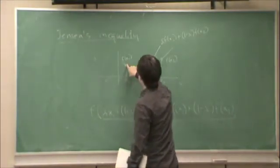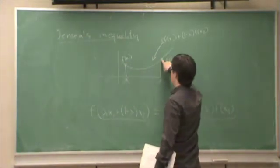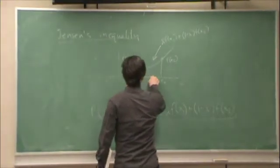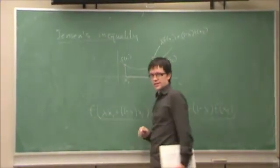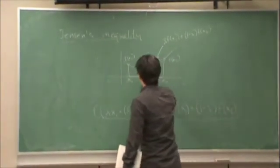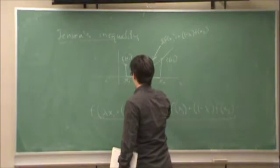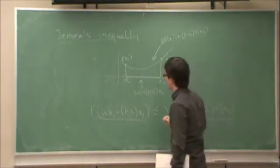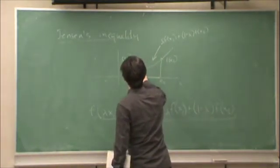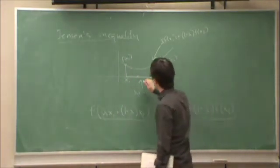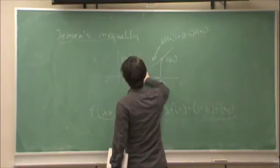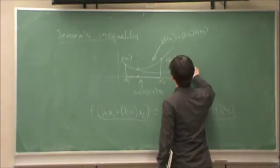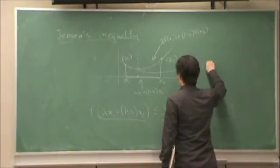So this line is the set of all linear combinations lambda f(x1) plus 1 minus lambda f(x2). Where if lambda is 1, then I'm here. And if lambda goes to 0, I end up closer and closer here. Similarly, the set of all linear combinations of x1 and x2 lie along this line. So somewhere along here, I have lambda x1 plus 1 minus lambda x2. So if I pick a particular lambda, I will end up at a particular point along this line.